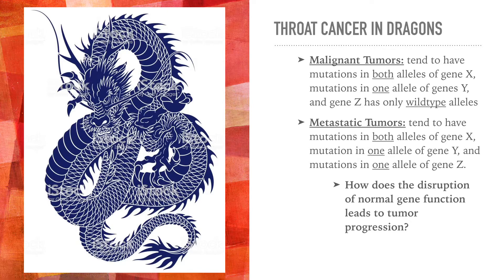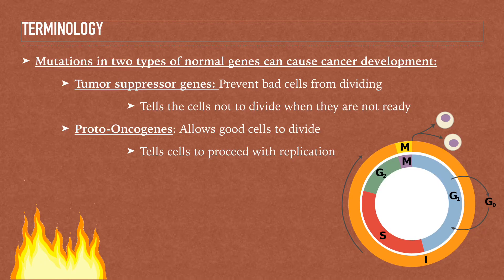We're going to go over how the disruption of normal gene function leads to tumor progression. Mutations in two types of normal genes can cause cancer development: tumor suppressor genes and proto-oncogenes. Tumor suppressor genes prevent bad cells from dividing, telling cells not to divide when they're not ready, while proto-oncogenes allow good cells to divide and tell cells to proceed with replication.